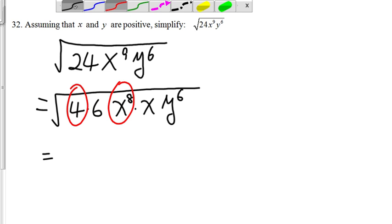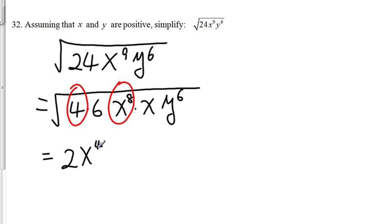So we get 2 from square root of 4, x to the 4th power because 8 divided by 2, and the next number we can take out, which is y to the 6th.